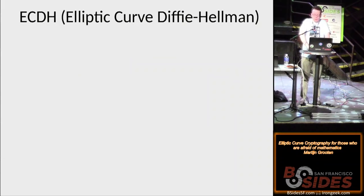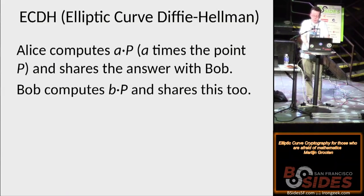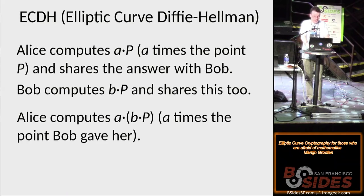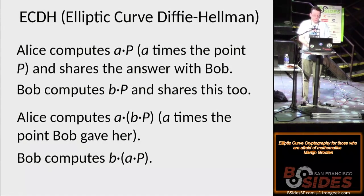And Alice chooses a large secret random number A, and Bob chooses a large random number B, and they both keep these numbers secret. Now Alice computes A times P, and as I said before, even if A is very large, she can do this very fast. And she shares this answer with Bob, and Bob computes B times P for his number B and shares this with Alice.